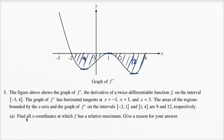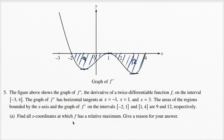Part a: find all x-coordinates at which f has a relative maximum. Give a reason for your answer. All x-coordinates at which f has a relative maximum. You might say this looks like a relative maximum over here, but this isn't f — this is the graph of f prime.